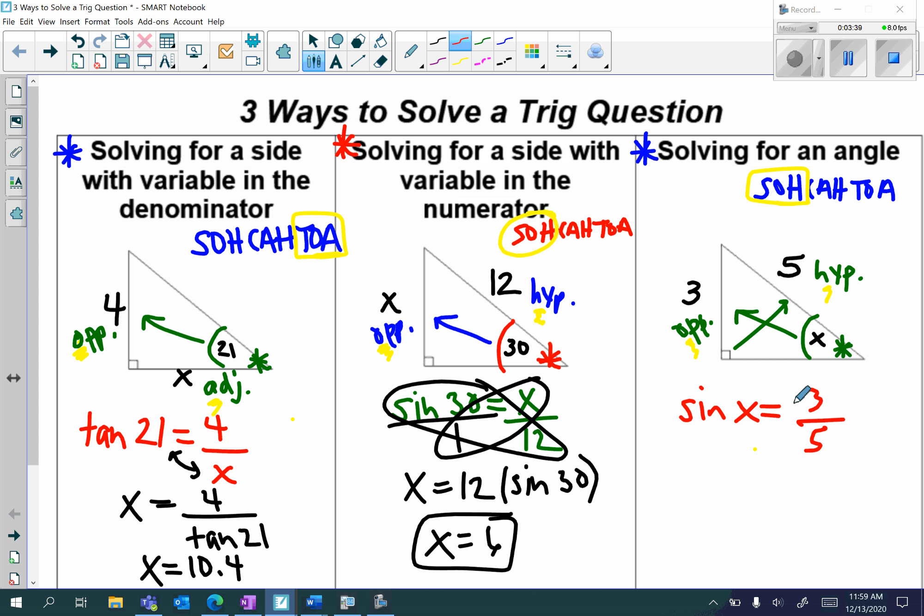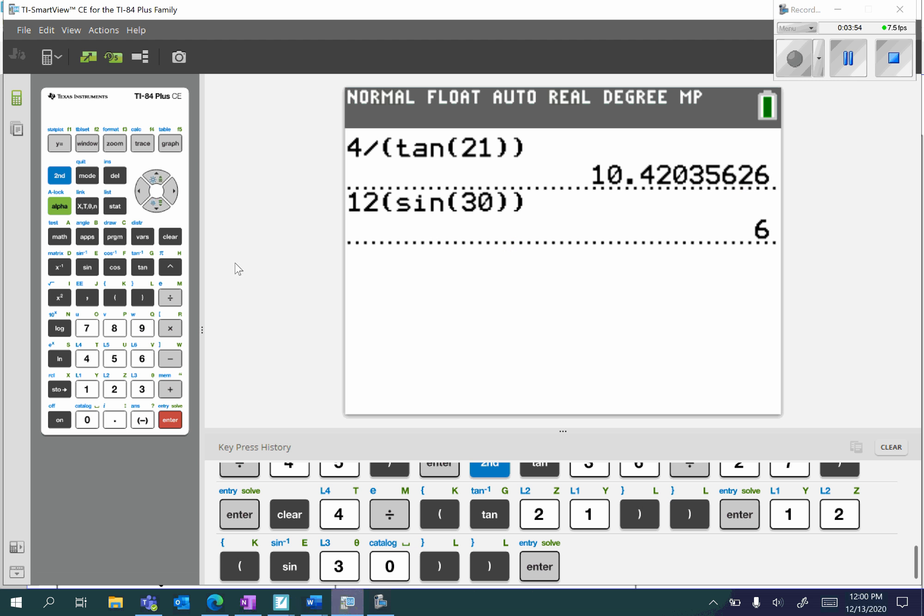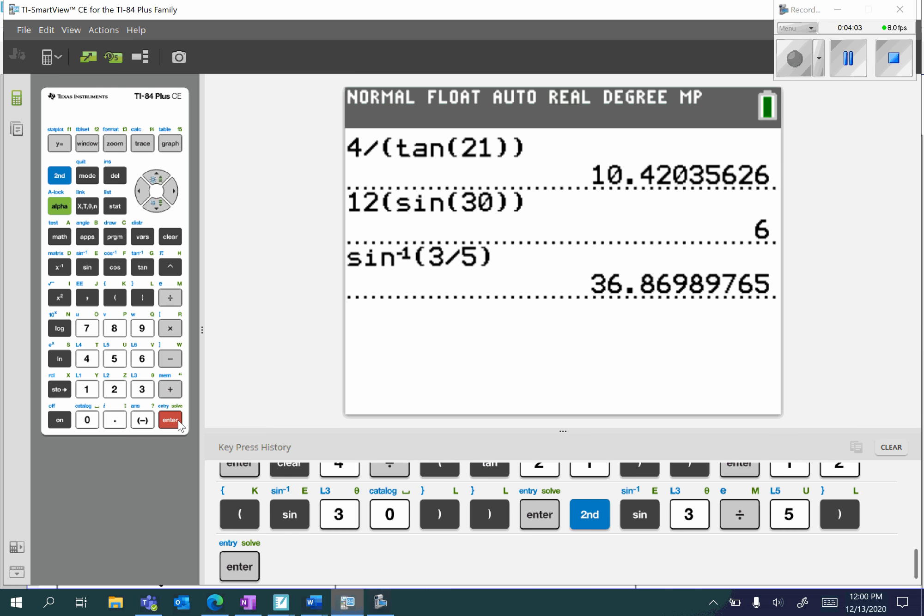Now remember, if we're looking for the angle, we have to press on our calculator, second sine, 3 divided by 5. And then type in our ratio, 3 over 5. So let's go into our calculator. Second sine, 3 divided by 5. And we'll get 36.86. So we're rounding to the nearest tenth, we're going to get 36.9.